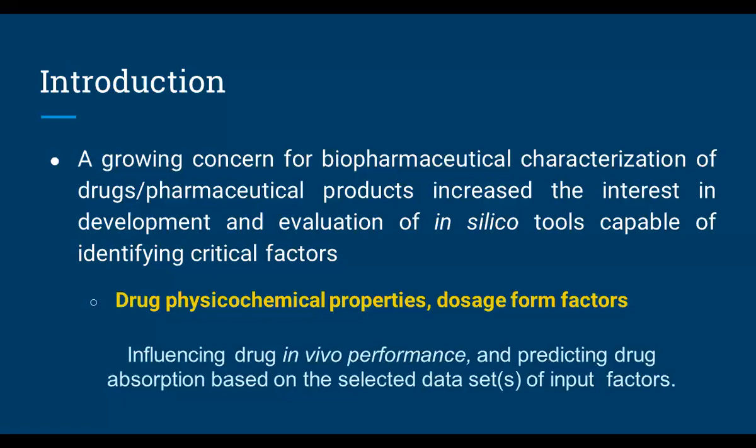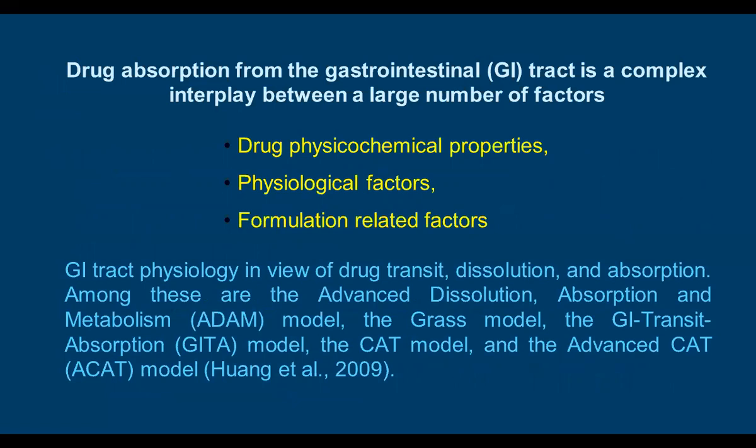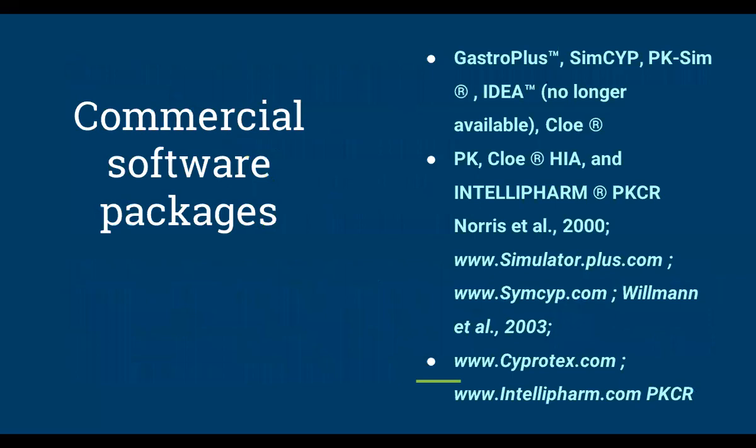It is very important to know about the input factors — these factors may be multiple. Drug absorption from the GIT is a complex interplay between a large number of factors. Generally, we need to understand drug physicochemical properties, physiological factors, and formulation-related factors. The GI tract physiology — in view of drug transit, dissolution, and absorption — is addressed by advanced models such as the ACAT model, GIT transit model, and others.